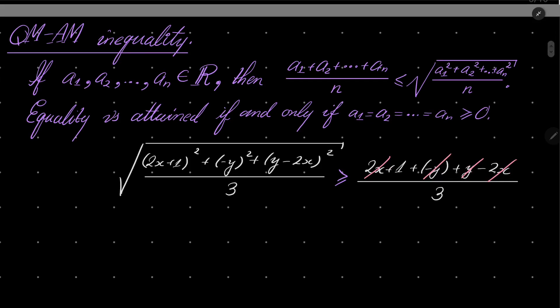The left-hand side is just 1/3. Now we can safely take the square root on both sides and we can multiply by 3, and we will get (2x + 1)² + y² + (y - 2x)² is greater than or equal to 1/3.